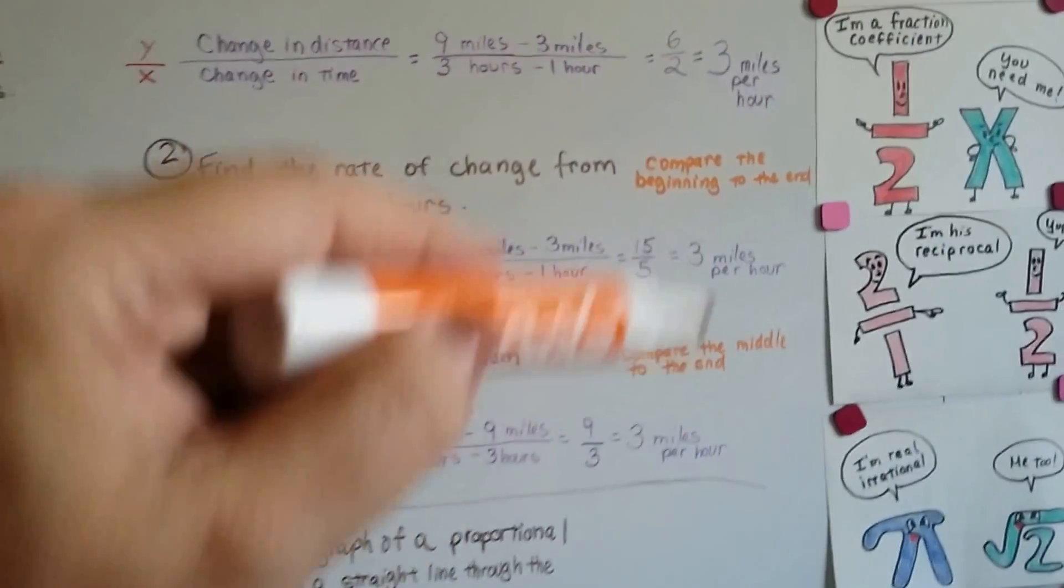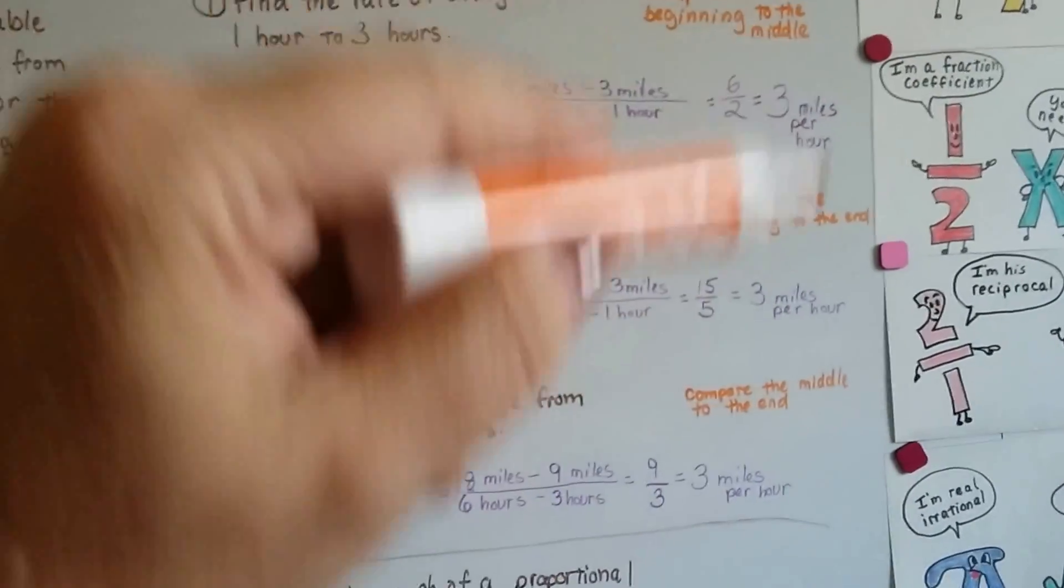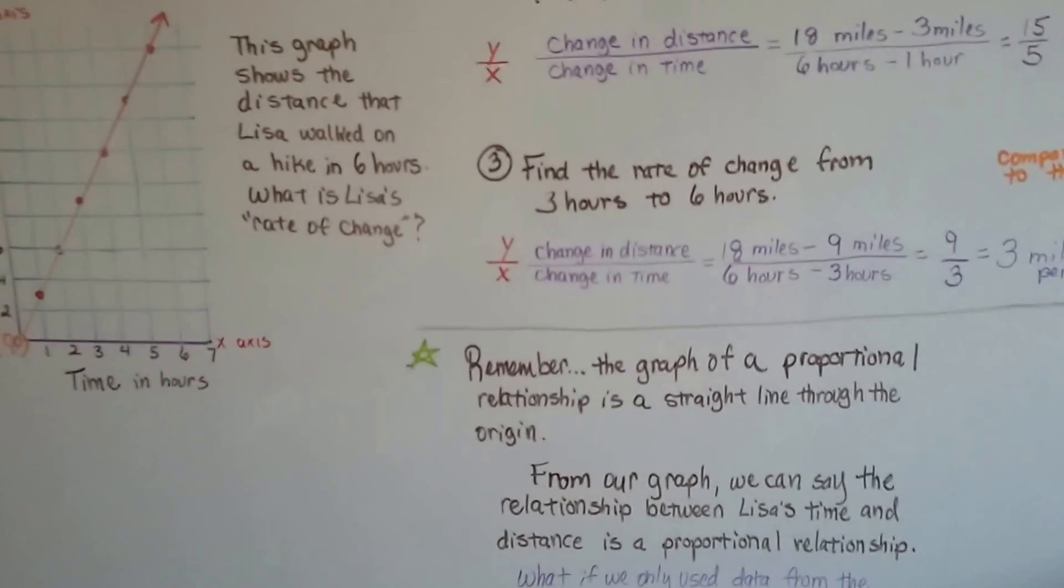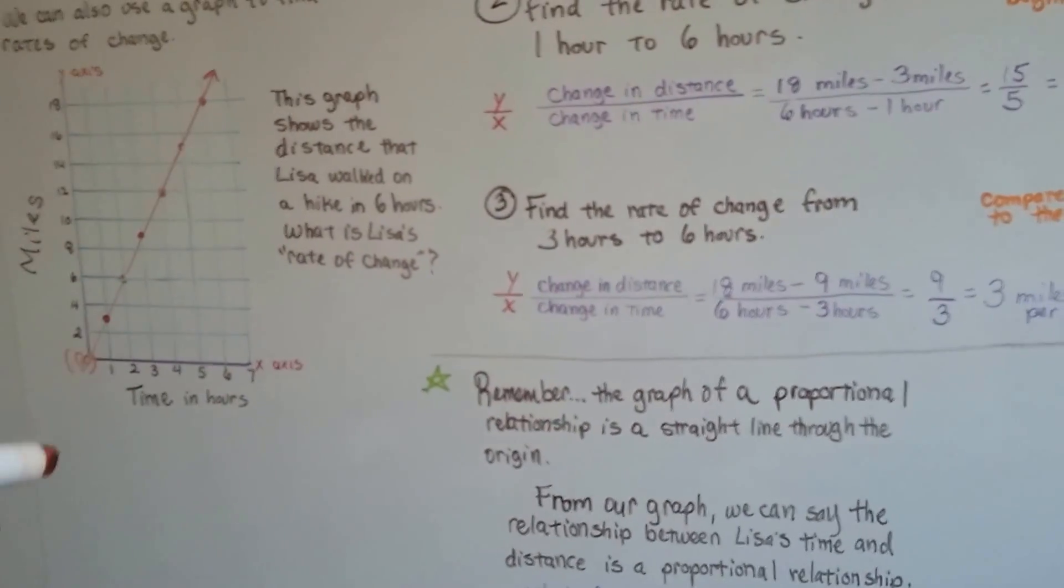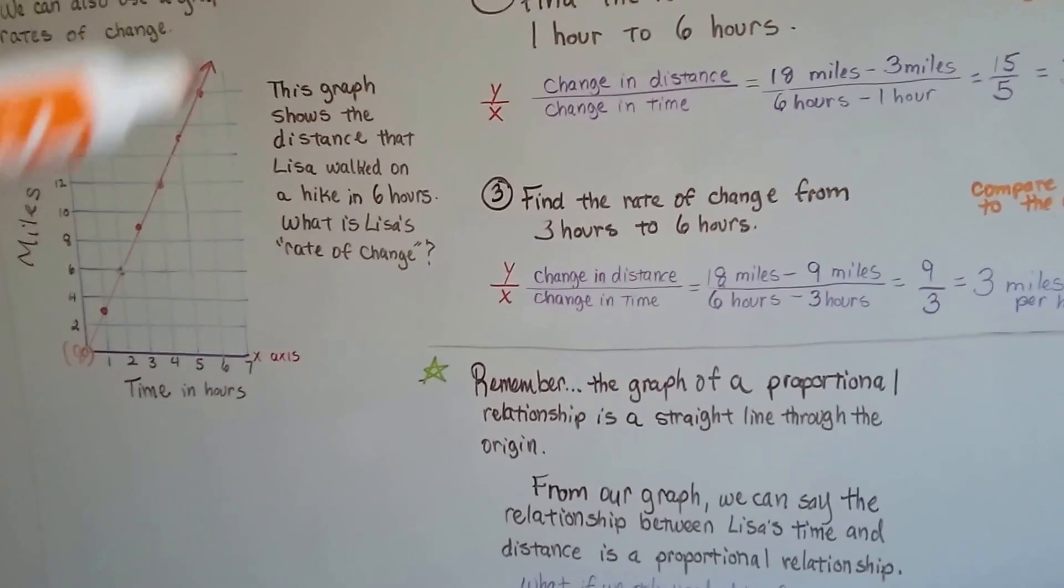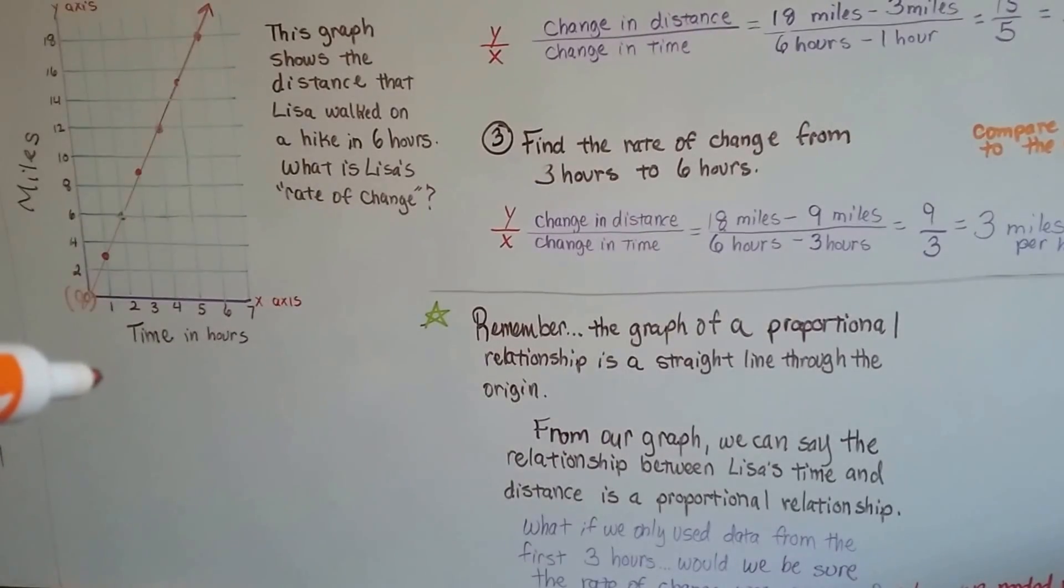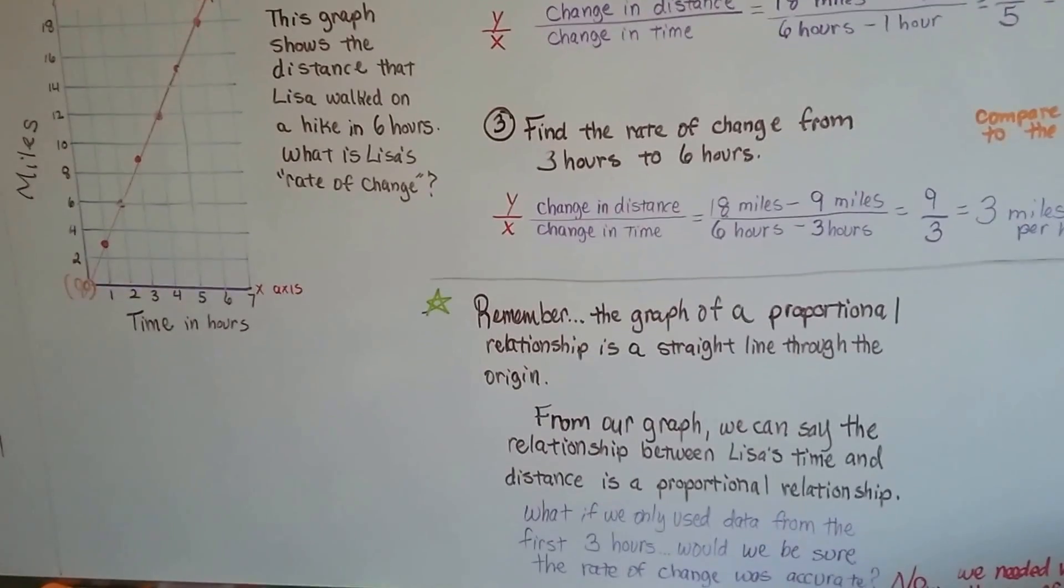Look, there was a constant of three miles per hour. It didn't change at all. So remember, the graph of a proportional relationship is a straight line through the origin, just like this one. And from our graph, we can say the relationship between Lisa's time and distance is a proportional relationship.